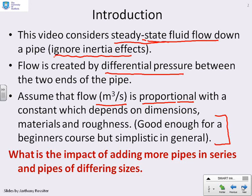In particular, we're now going to ask the question, what happens if we add more pipes in series? So we might have a model for a single pipe, what happens if there's lots of pipes arranged in series, and possibly pipes of different sizes, or different materials, and different roughness?